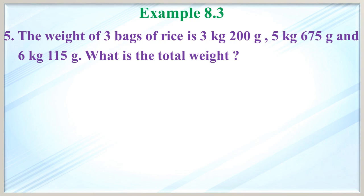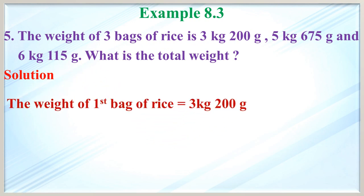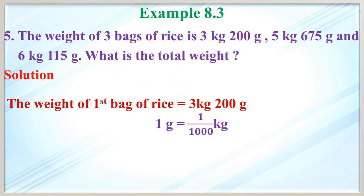Fifth one: the weight of three bags of rice is 3 kg 200 gram, 5 kg 675 gram and 6 kg 115 gram. What is the total weight? Write the weight of the first bag: 3 kg 200 gram. The units are different, so convert smaller unit to bigger unit. 1 gram equals 1 by 1000 kg.